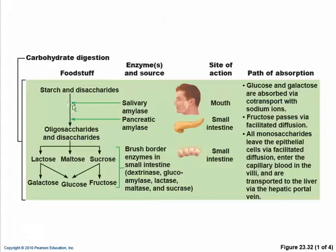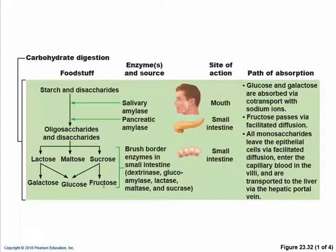Starches are broken down by salivary amylase and pancreatic amylase into oligosaccharides and disaccharides — lactose, maltose, and sucrose. The brush border enzymes break those down into galactose, glucose, and fructose. Sucrose yields glucose and fructose; lactose yields galactose and glucose; maltose yields two glucoses. They enter the blood in the capillaries of the villi, and then the hepatic portal vein takes them to the liver.